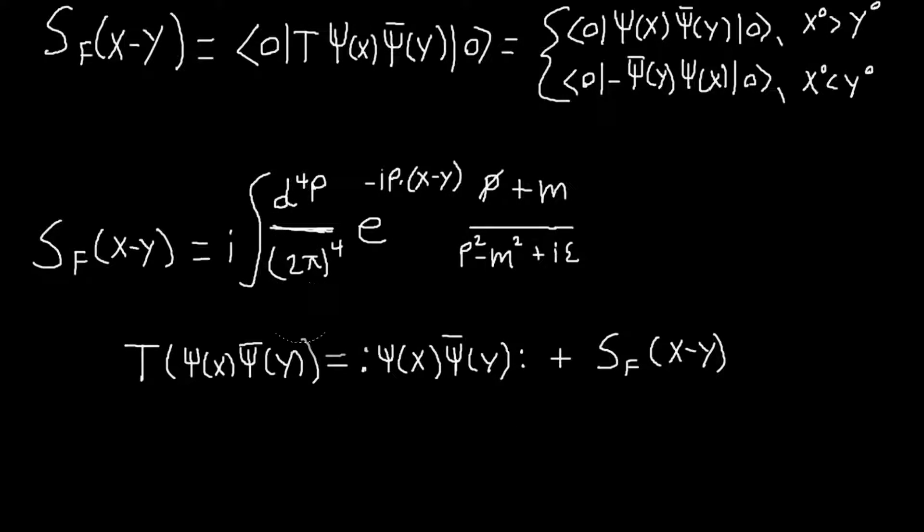And so similar to before, our time ordering operator will be defined as the normal ordered operators plus all possible contractions, which, for the case of two fields, is just one possible contraction. And again, the contraction is just the Feynman propagator of, in this case, X minus Y.